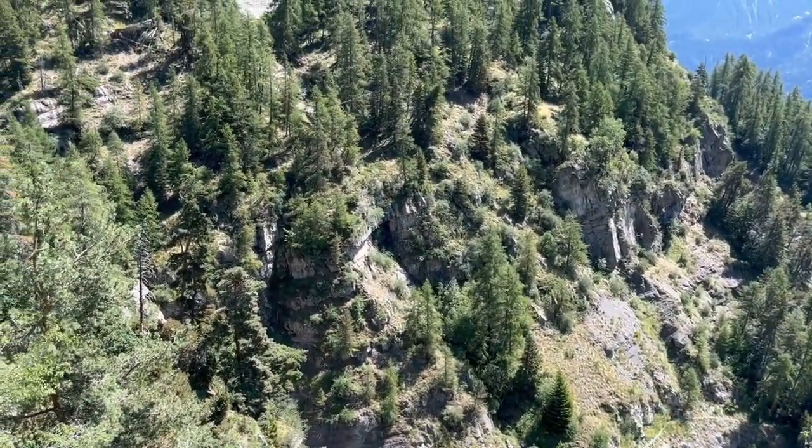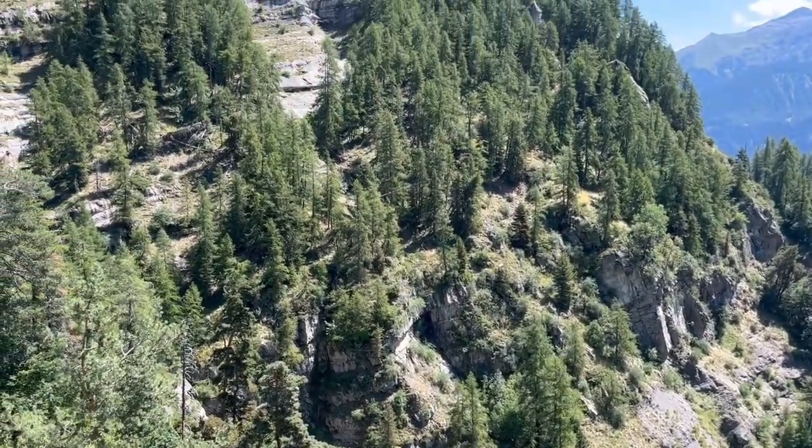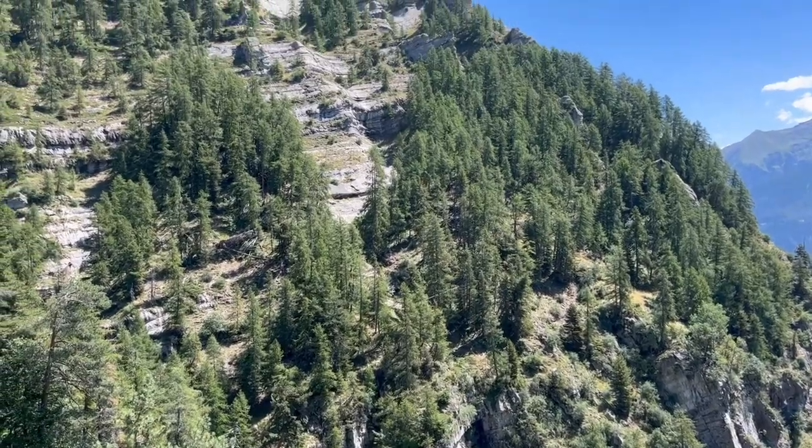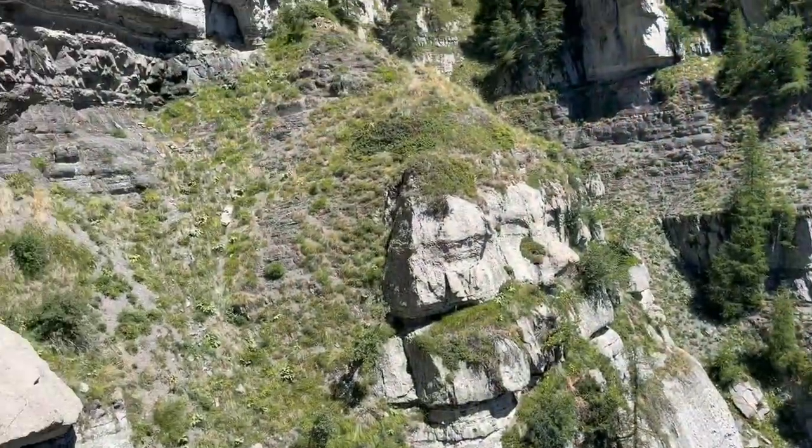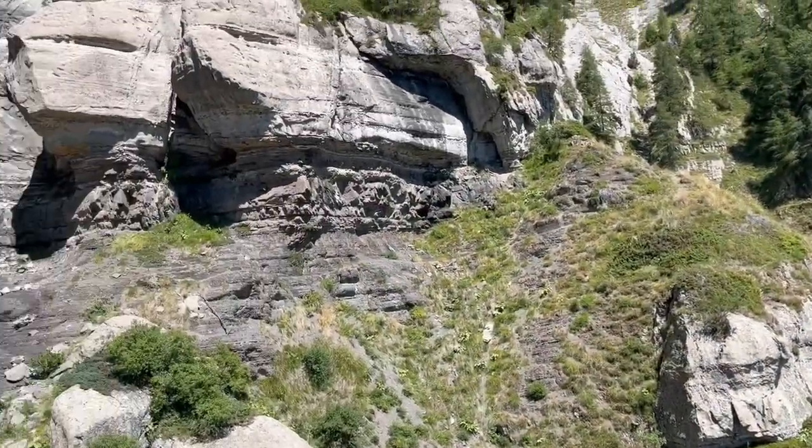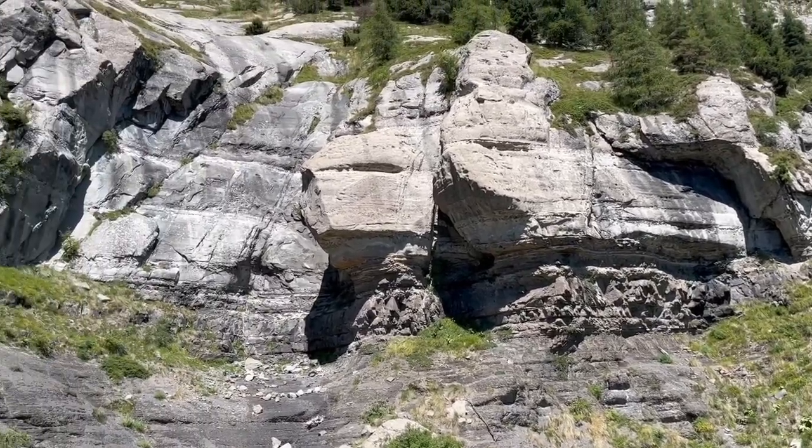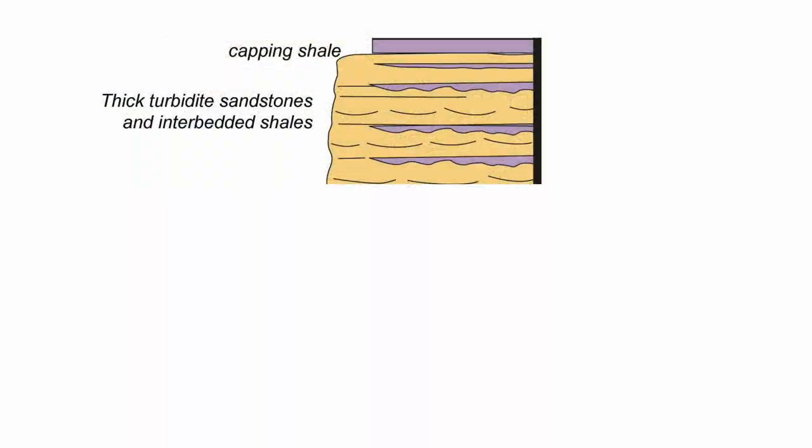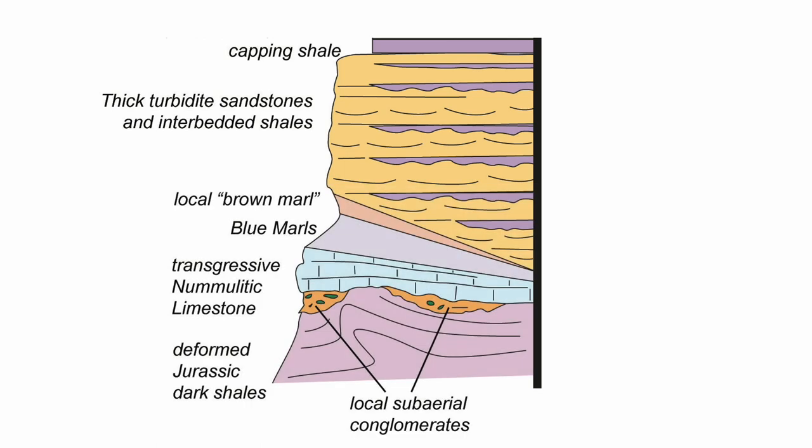The deformation here affects a deep pile of deep water sandstones, turbidites—thick sand layers interbedded with thick fine-grained units or shale, simplified in this cartoon. They lie upon a substrate of limestones and much older Jurassic shales. So that's the starting material.